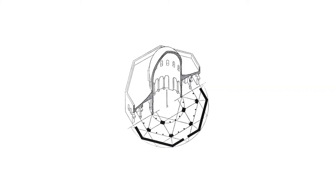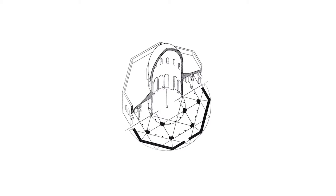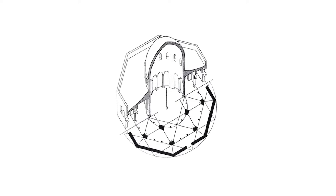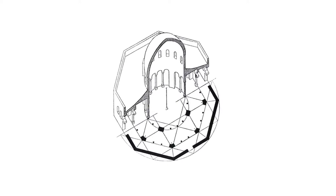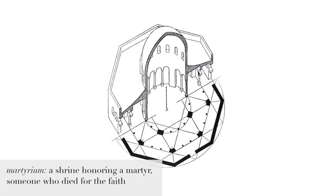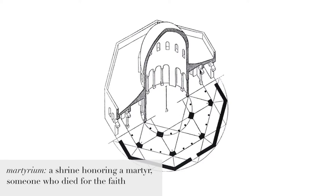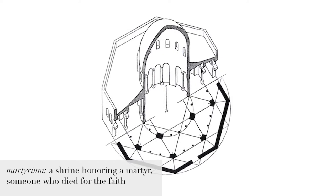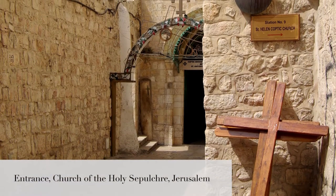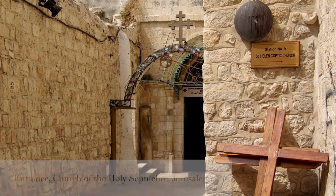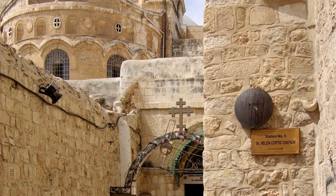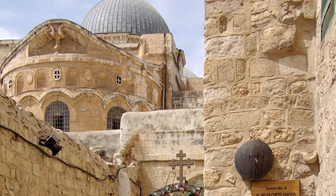The Dome of the Rock's 7th century core design is an octagon capped with a central dome. Earlier centralized baptistry buildings, as well as other Christian shrines, may have inspired this design. In the region, the building type was used for communal Christian spaces such as the centralized martyrium building in Jerusalem called the Chapel of St. Mary from the 5th century. But there's another local parallel that probably exerted even more influence: in early Islamic Jerusalem, the most celebrated martyrium was the Church of the Holy Sepulchre.